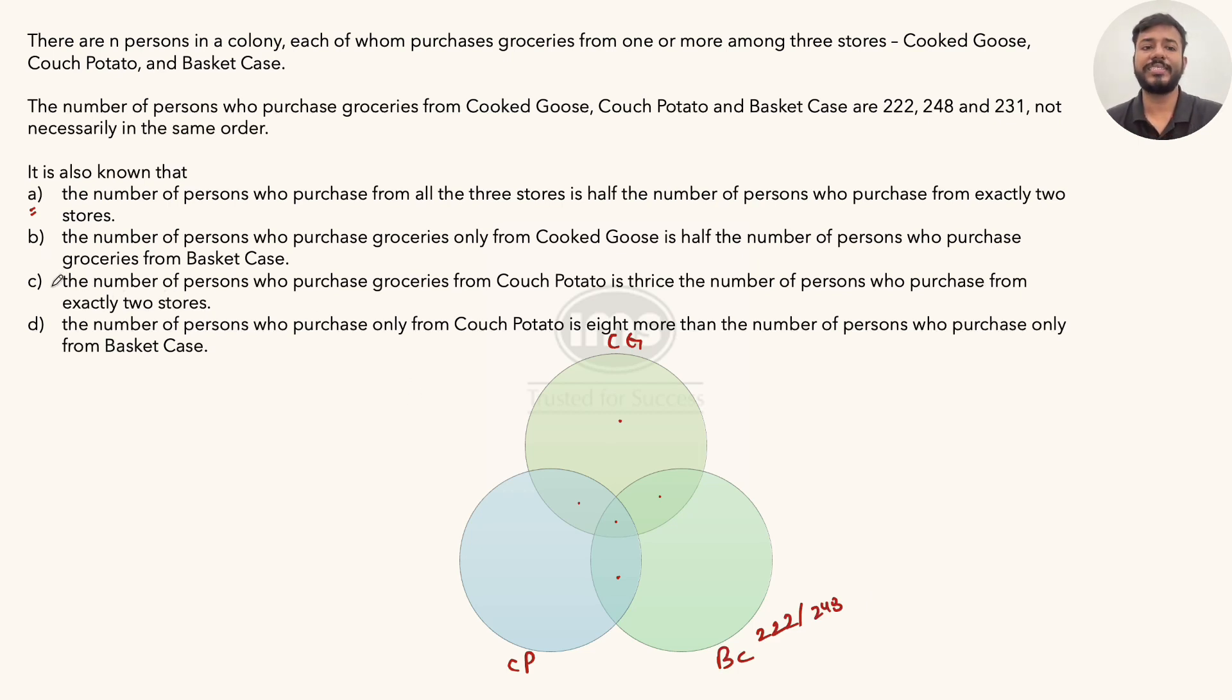Only Cooked Goose, this part, is half of the total number of people who purchase groceries from Basket Case. Now, number of people cannot be fraction. So CG's only part has to be half of BC's total. For something to be half of a whole number without fraction, the total BC must be an even number.